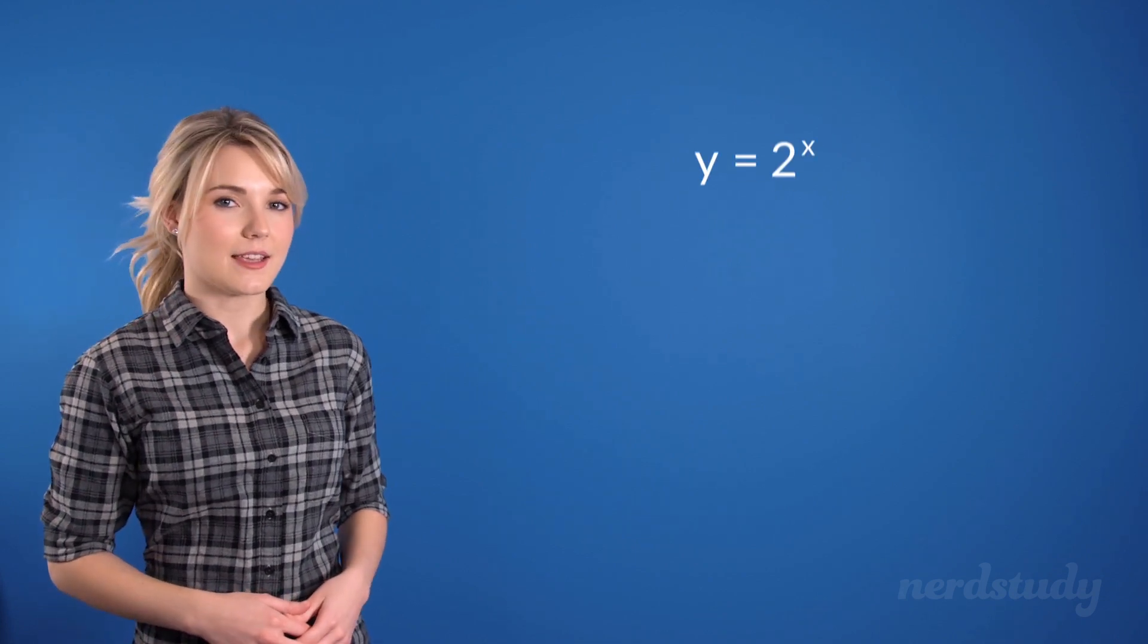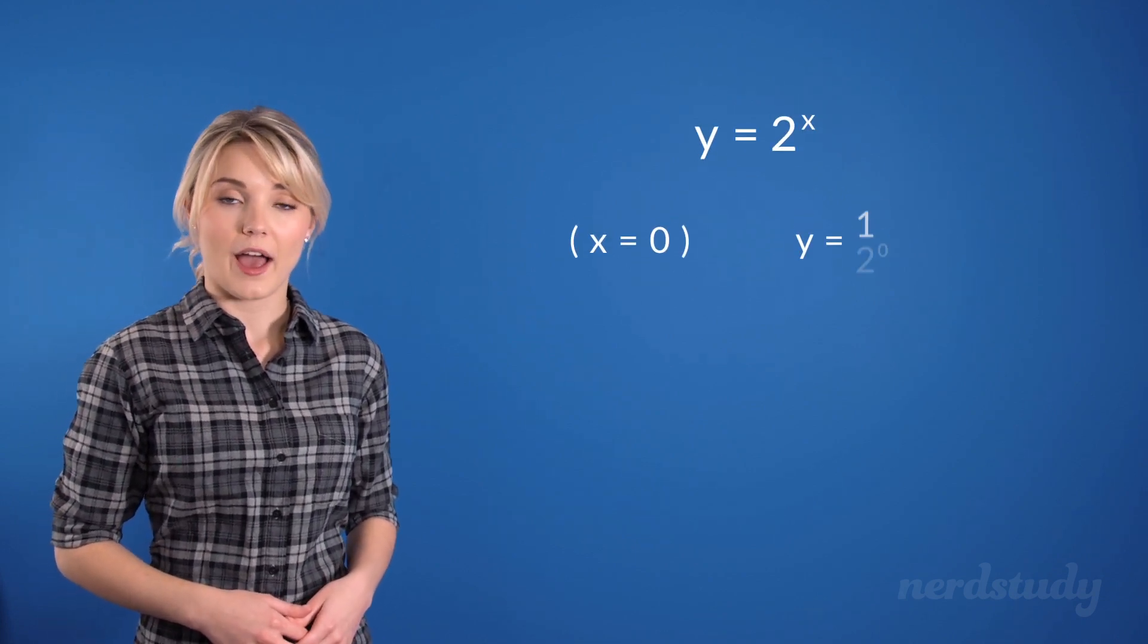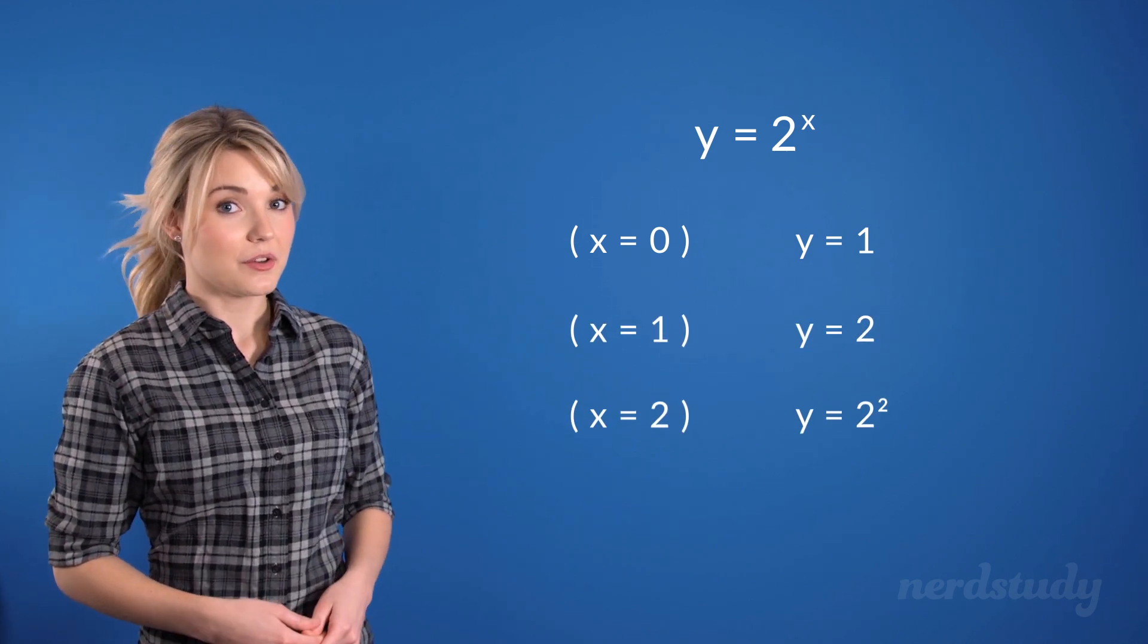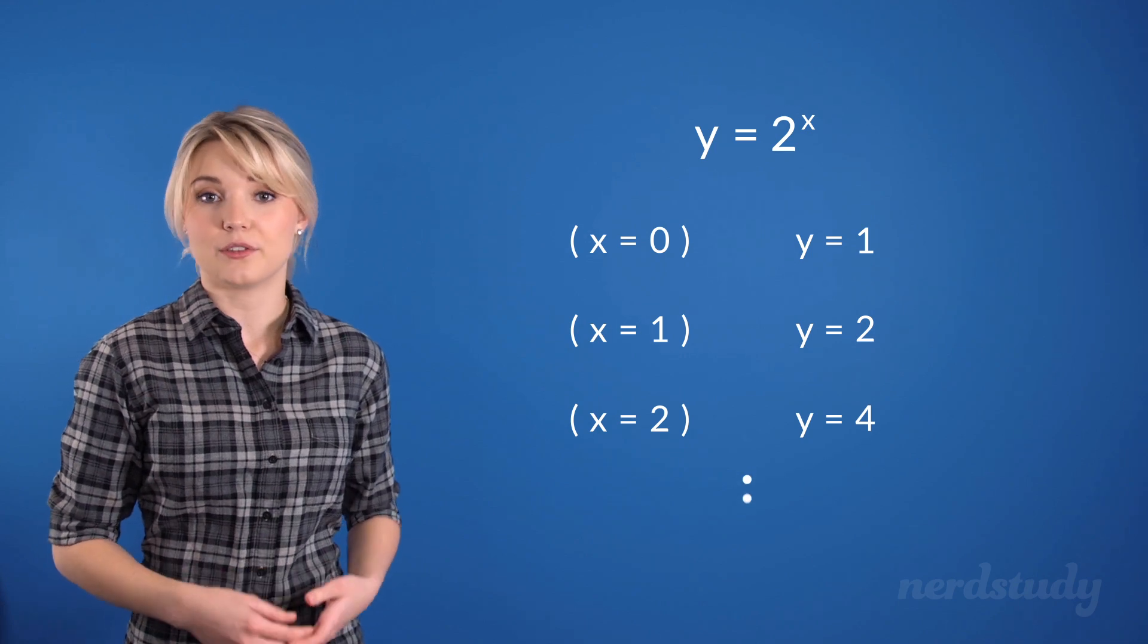In an exponential function, however, the x value is the exponent itself. An example of an exponential function would be y equals 2 to the exponent x. As you can see, if x is 0, y is 1. If x is 1, y is 2. If x is 2, y is 4, and so on and so forth.